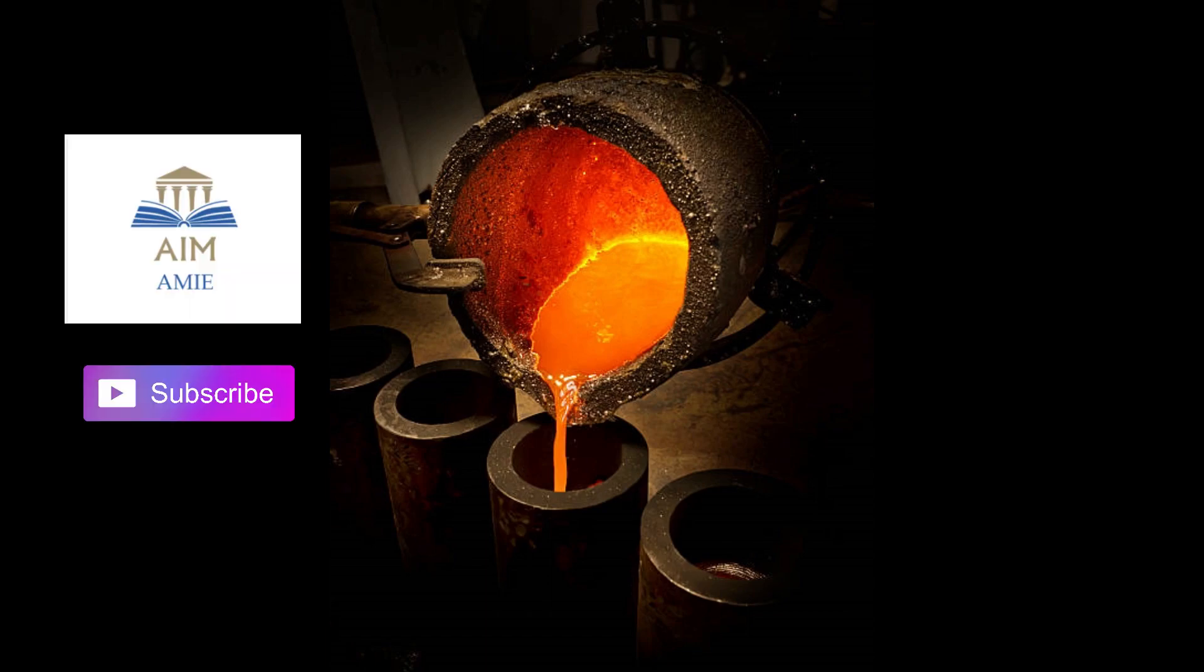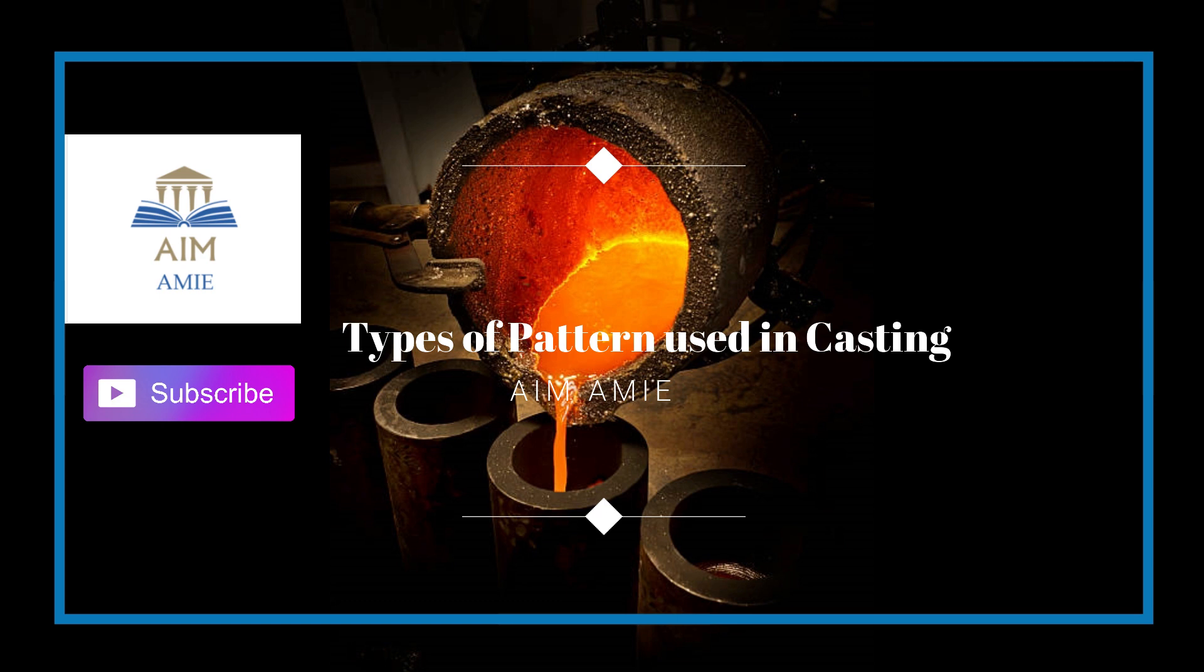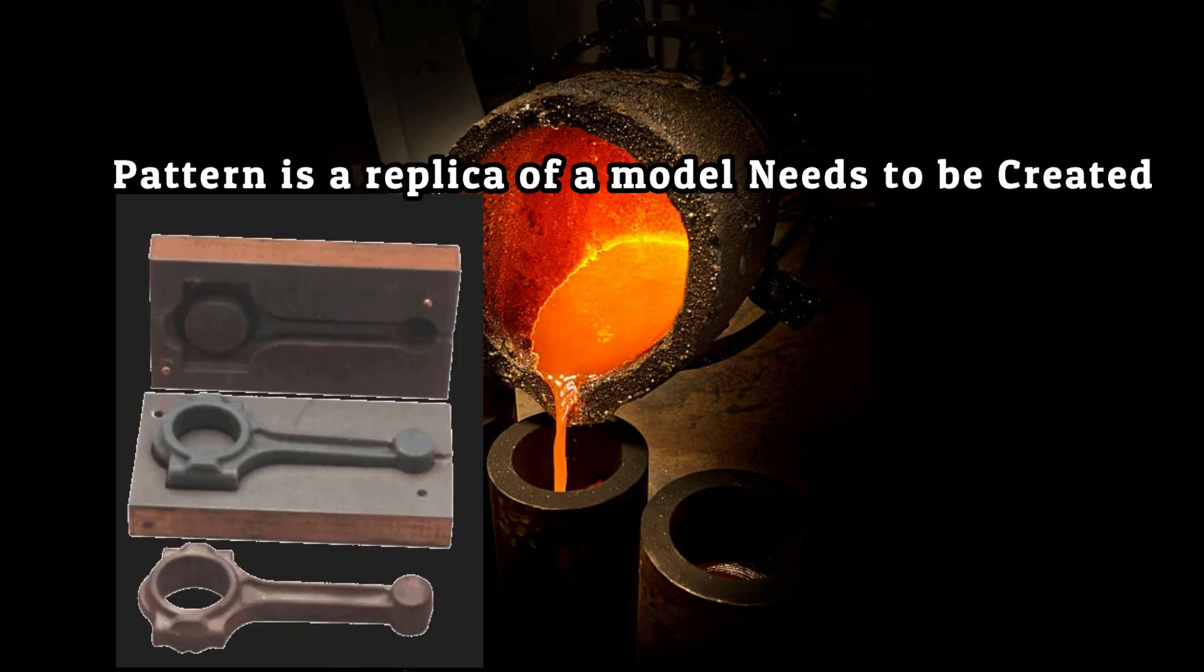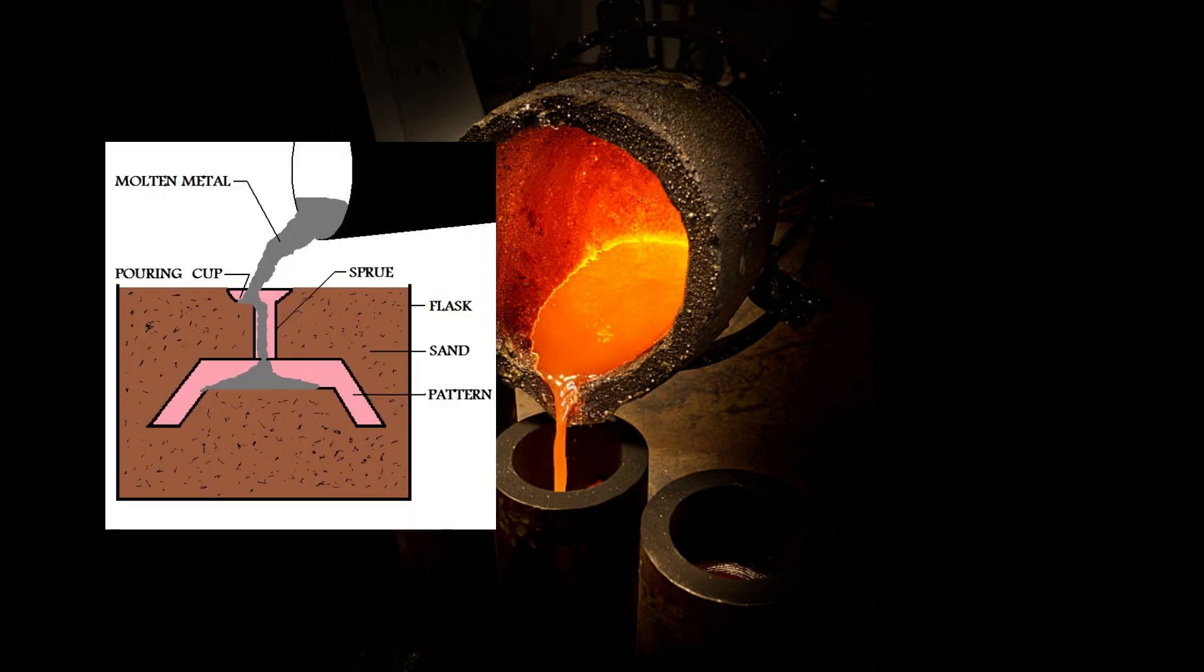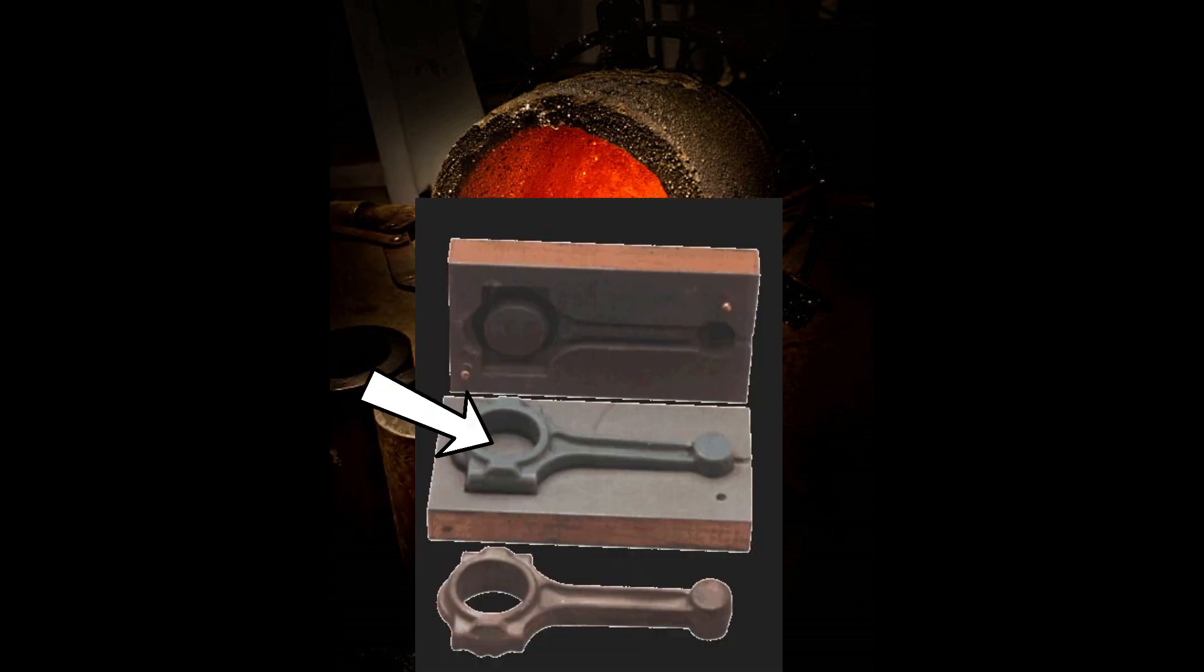Hello guys, welcome back to Aim Amy. Today we will learn about types of patterns used in casting. A pattern is a replica or model of an object which needs to be created. It is used to make a hollow cavity in sand mold in which molten metal is poured and allowed to solidify to create the object.